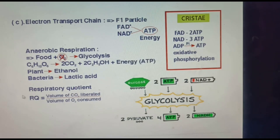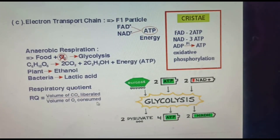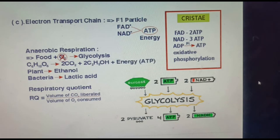Next is the respiratory quotient, RQ. The respiratory quotient is the ratio of the volume of carbon dioxide produced to the volume of oxygen consumed. The formula is: RQ = volume of CO2 liberated ÷ volume of O2 consumed. The RQ value changes depending on the substrate — glucose, fatty acids, or amino acids.